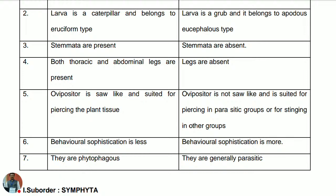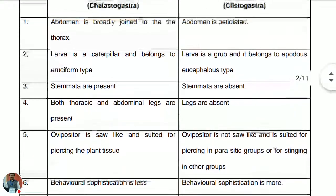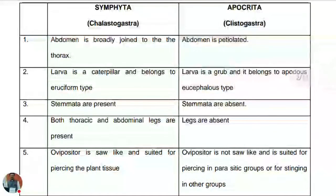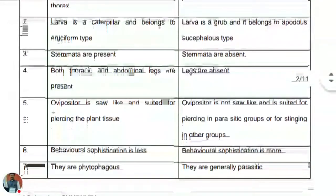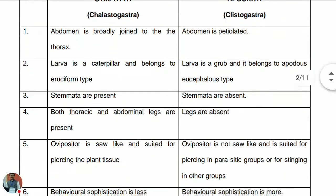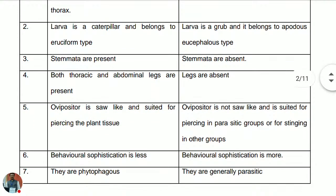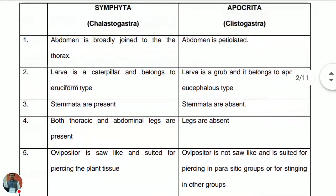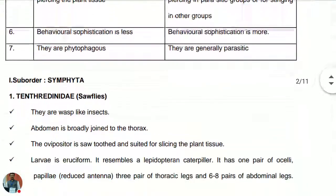Symphyta is phytophagous — feeding on plants — and they can be pests on crops. Apocrita are generally parasitic. You can get the idea of these two suborders through this chart. Now we will look at the names of the families under Suborder Symphyta.